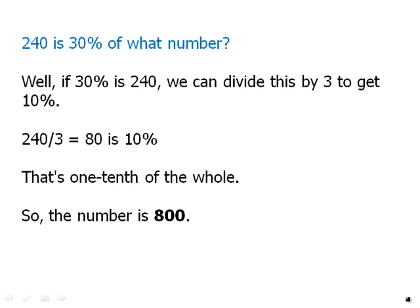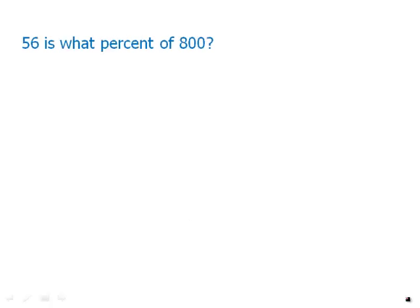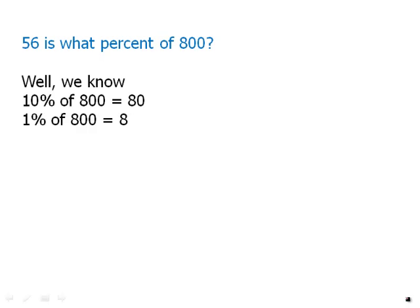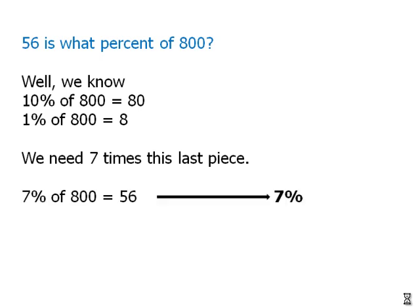Notice that all of these are things we can do without a calculator. 56 is what percent of 800? Well, first of all, 10% of 800 is 80. We know 56 is less than that, so we know we're dealing with less than 10%. 1% of 800 is 8. We need 7 of this last piece. So, 7 times 8 is 56, so that means we're dealing with 7% of 800. Again, everything here we can do without a calculator.